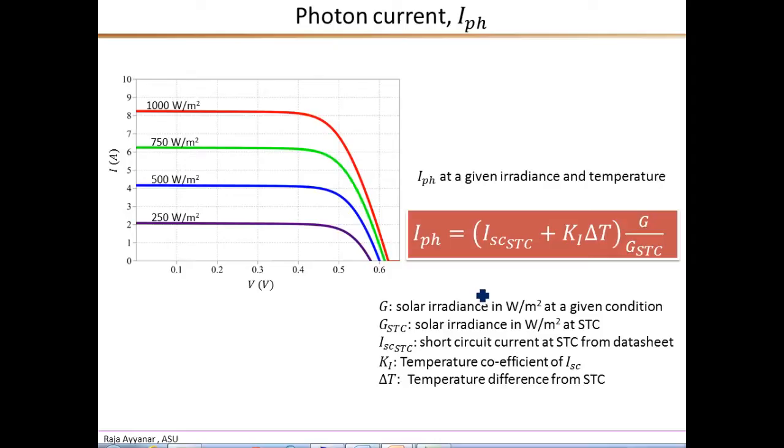Okay, and then to get the photon current value under any arbitrary conditions other than the STC, we can use this expression. So here we make use of the fact that the photon current is linearly proportional to the solar irradiance level. So that is accounted for by this gain term. So we multiply the photon current measured, the ISC_STC, the short-circuit current under standard test conditions STC, so we scale that by this factor G over GSTC, where G is the solar irradiance under the given condition at which we want the photon current. And GSTC, of course, is the solar irradiance under standard test conditions or 1000 watts per square meter.